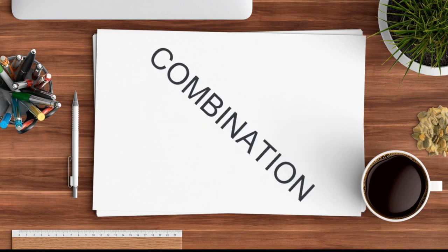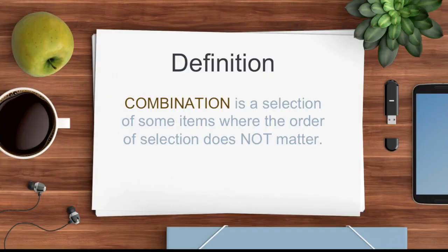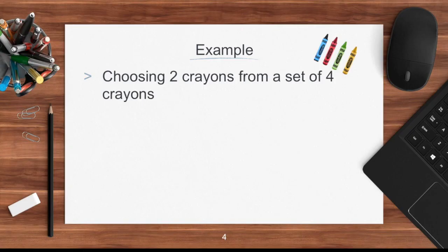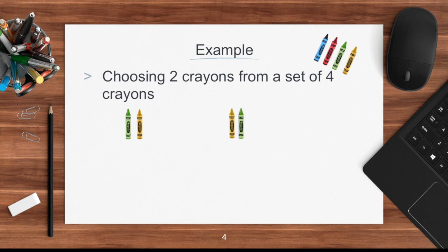Now, what is combination? Combination is a selection of some items where the order of selection does not matter. One example is choosing two crayons from a set of four crayons — blue, red, green, and yellow. One possibility is green and yellow. But since this is combination, the order doesn't matter, so green-yellow and yellow-green are counted as one. It is the same outcome, counted as one.